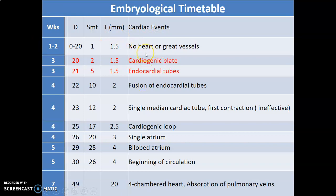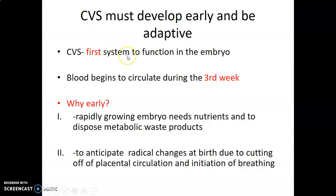This is the embryonic timetable of development of the cardiovascular system. Of notice is that cardiogenic plates are formed by day 20, and endocardial tubes by day 21. By week 5, or 30 days, circulation begins. The cardiovascular system is the first system to function in an embryo, and blood begins to circulate during the third week.